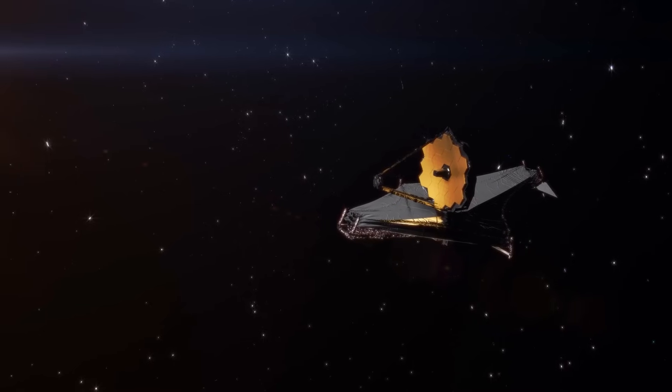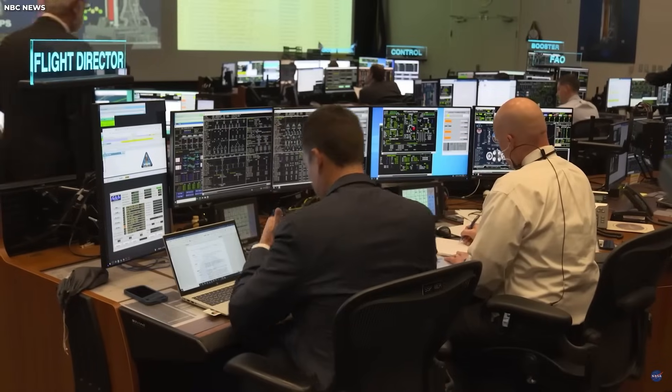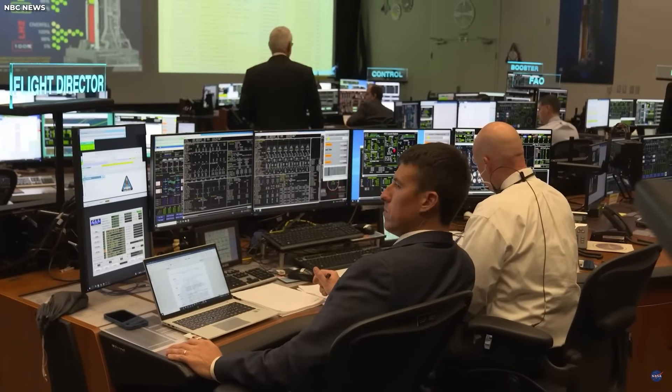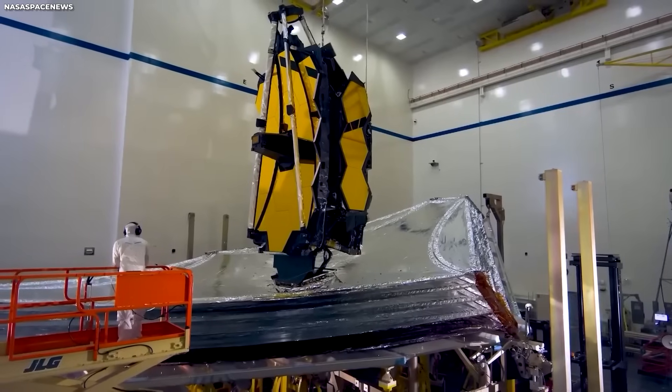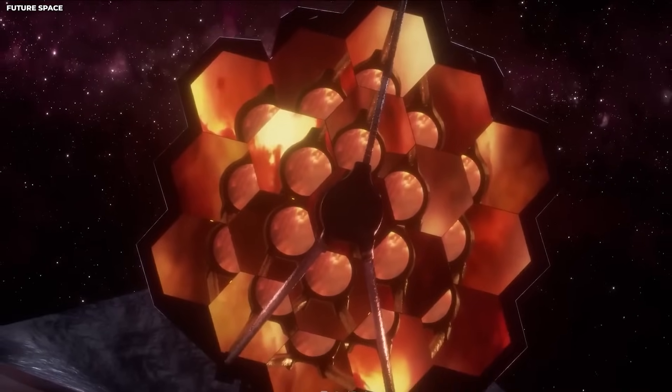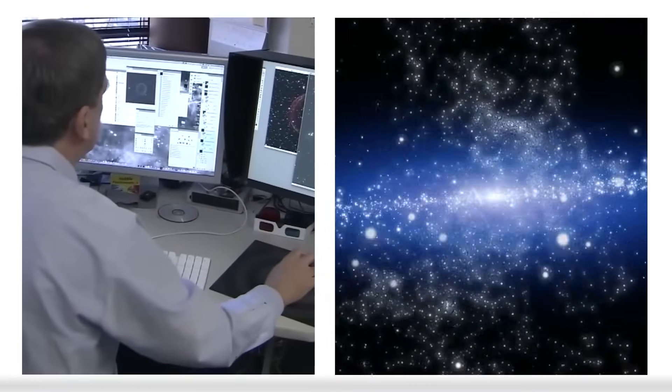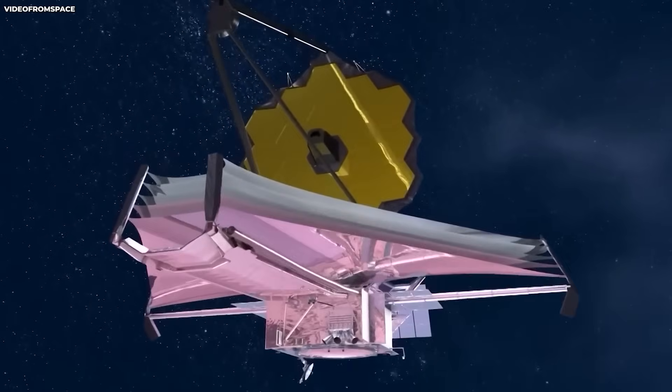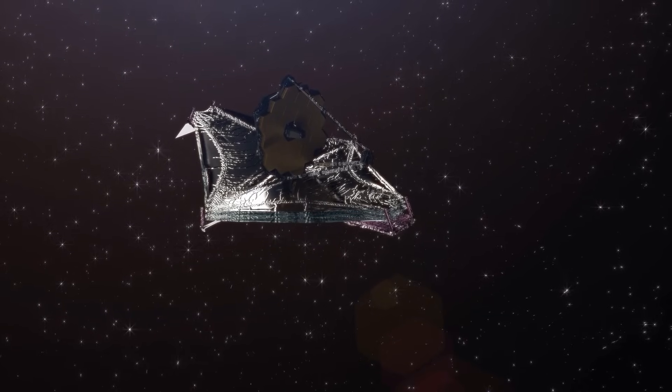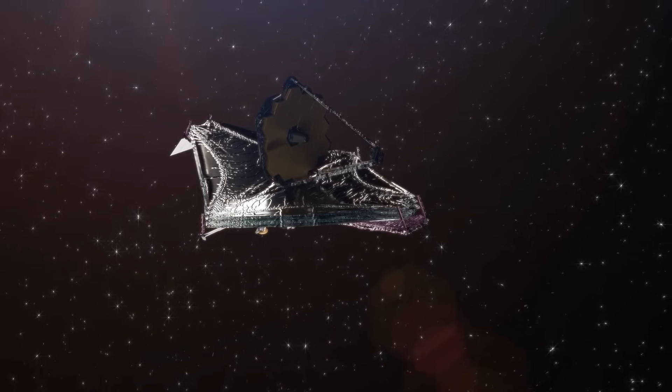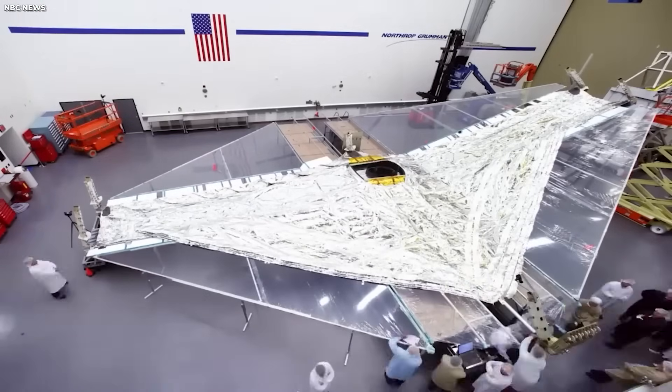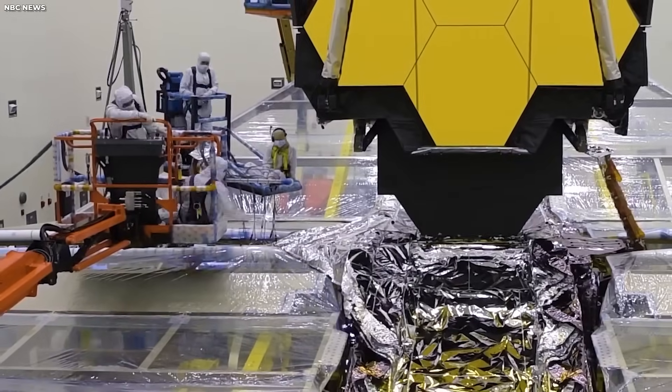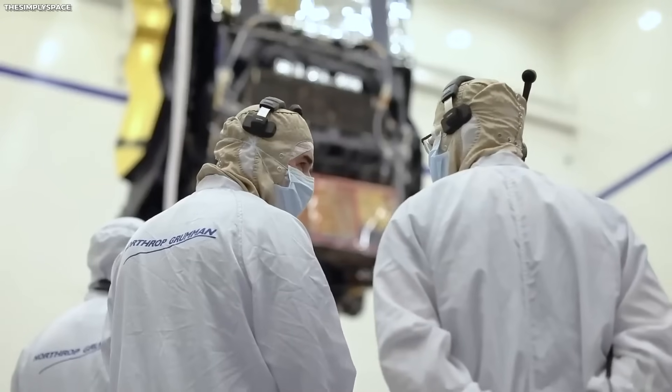Before the JWST could commence its cosmic observations, it had to undergo crucial science and calibration tests. One of the most critical steps involved unfurling its massive sun shield, a five-layered membrane meticulously designed to protect the telescope's delicate instruments from the sun's intense heat and light. The unfurling process required meticulous care and attention. Fortunately, the unfurling test was successful, paving the way for the next steps.